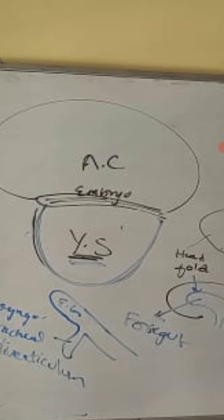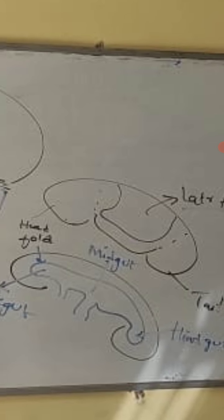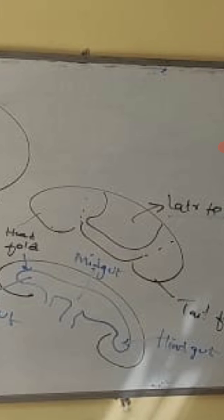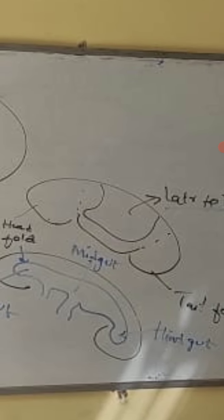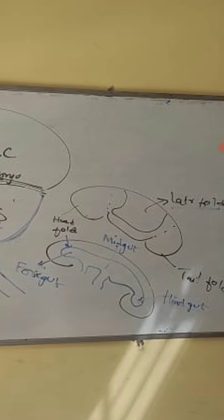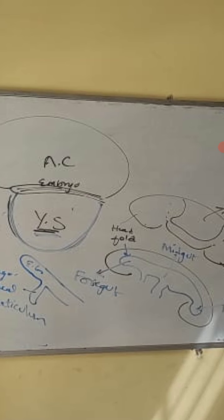The embryo, which is disc-shaped, now starts becoming cylindrical. At the fourth week of intrauterine life there will be four folds: at the cranial-most aspect there is one head fold, at the caudal-most aspect there is one tail fold, and in the middle portion there will be two lateral folds. Imagine you are wearing a jacket — when you put your arms into both sleeves, the jacket comes forward. That is how the two lateral folds work.